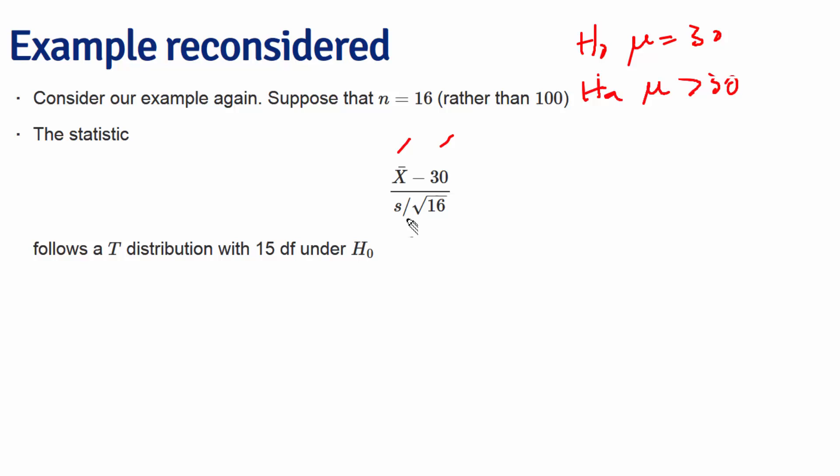It's divided by the standard error of the mean, where now we have square root 16 rather than square root 100, and recall S was 10.